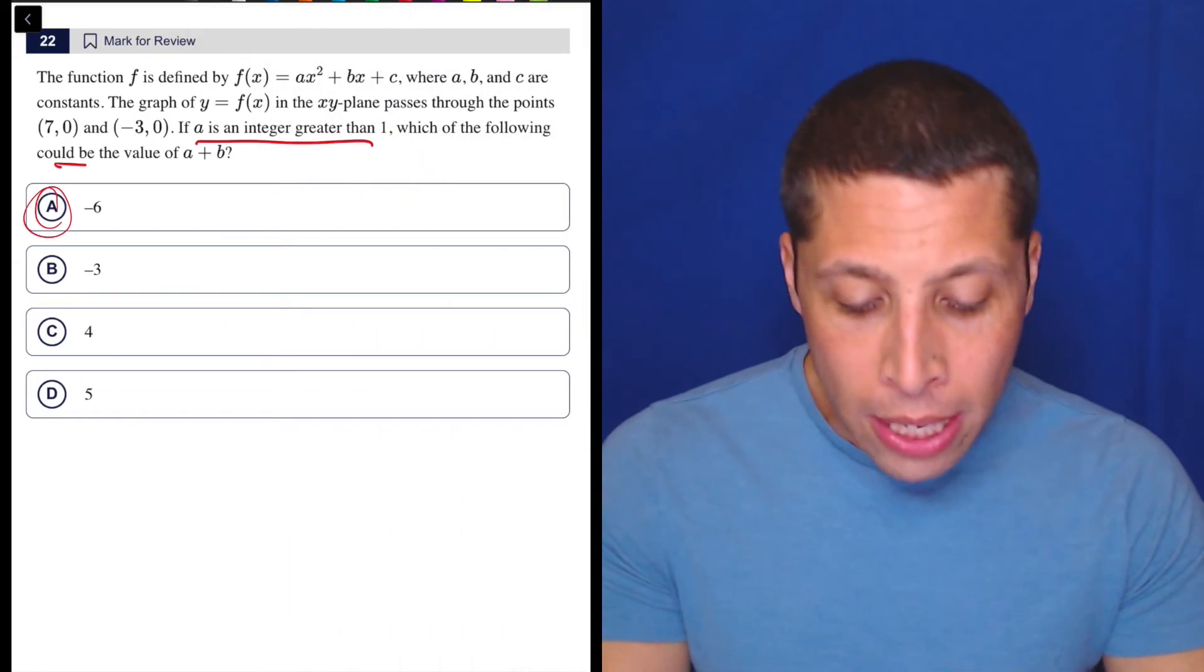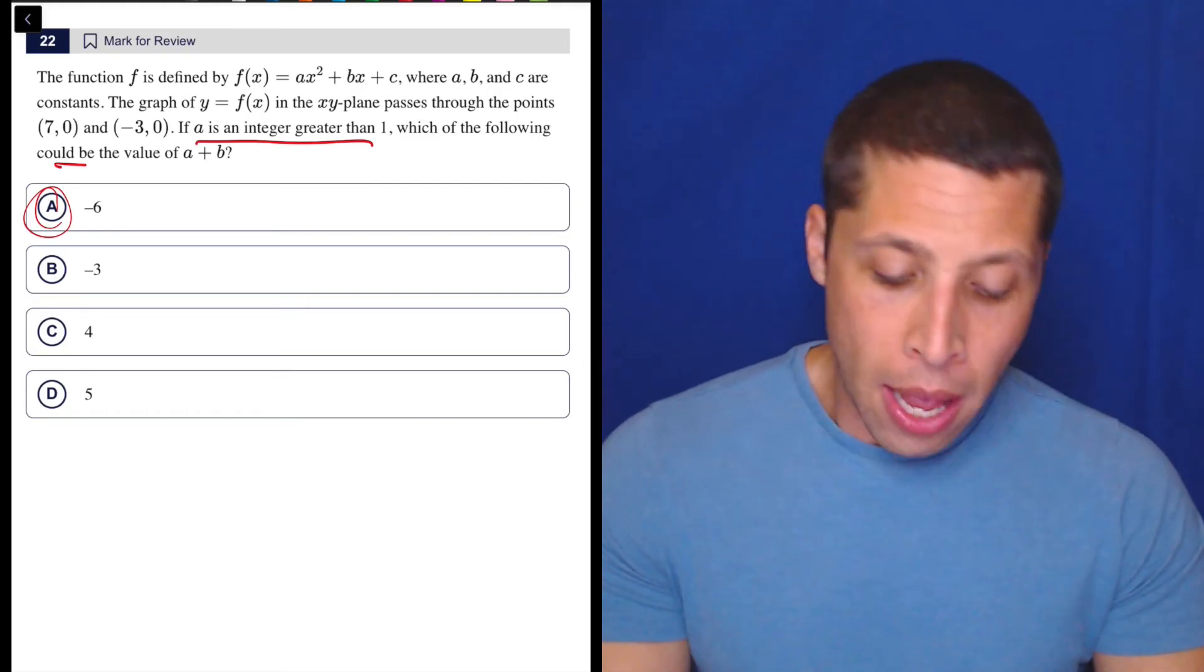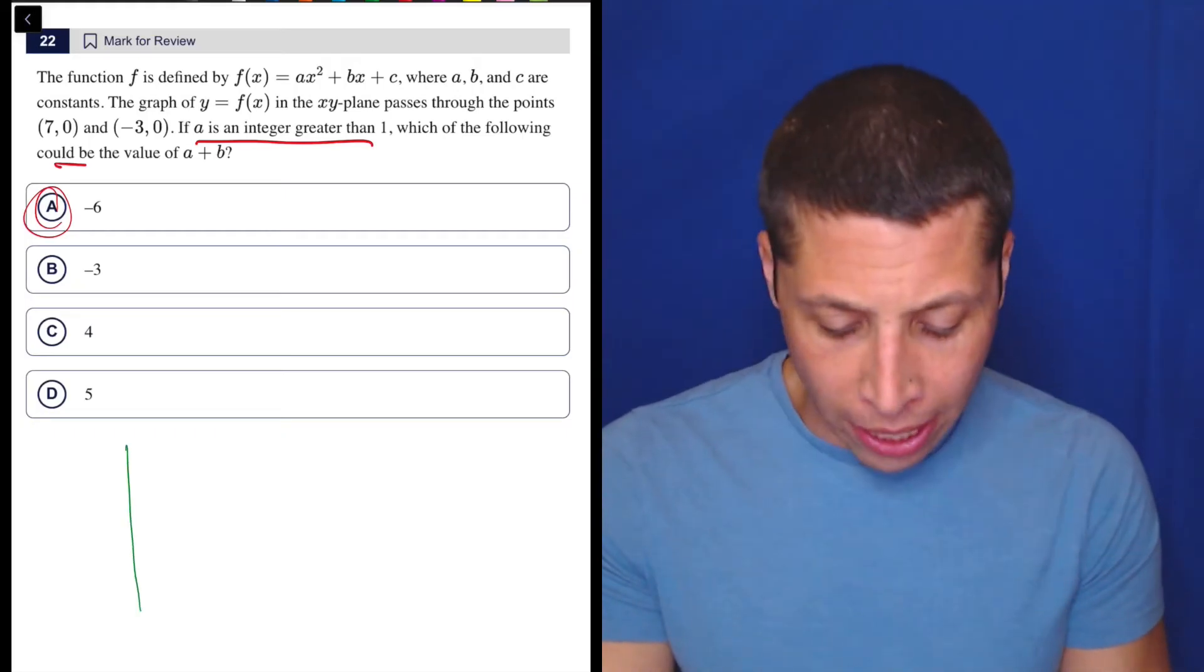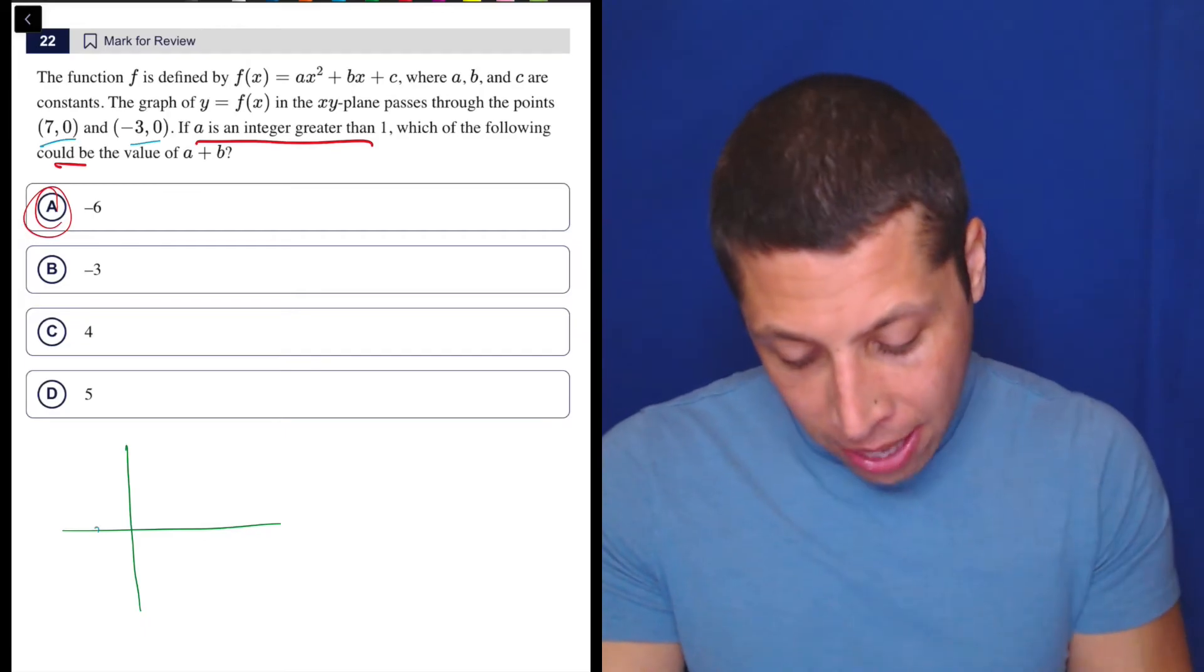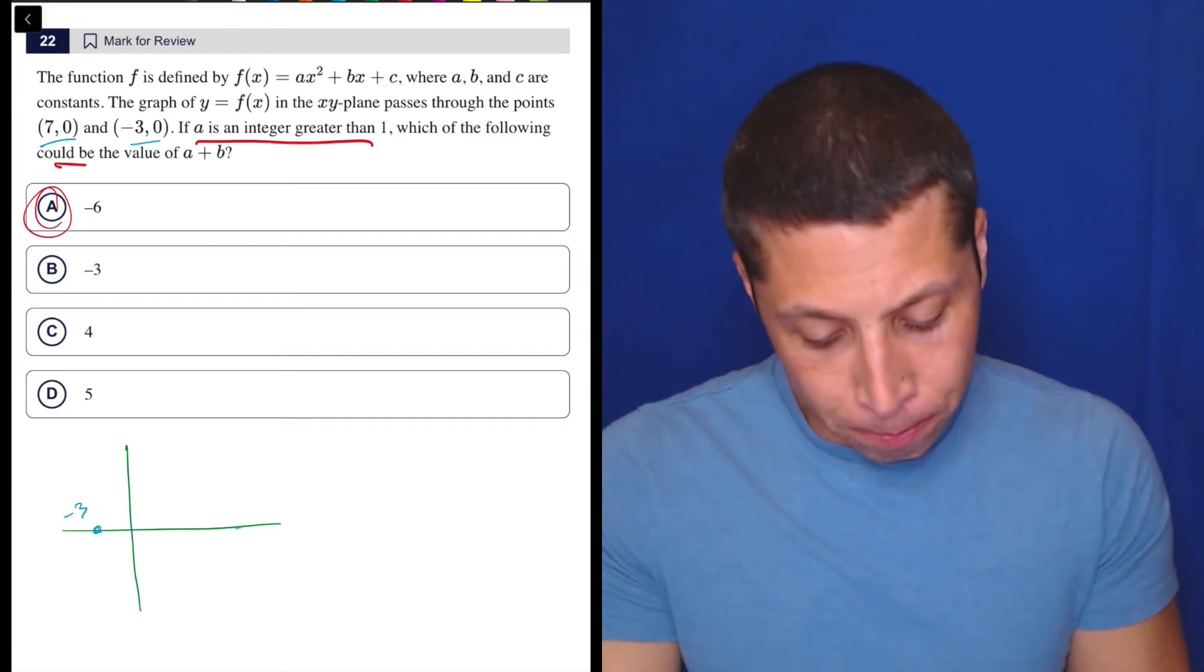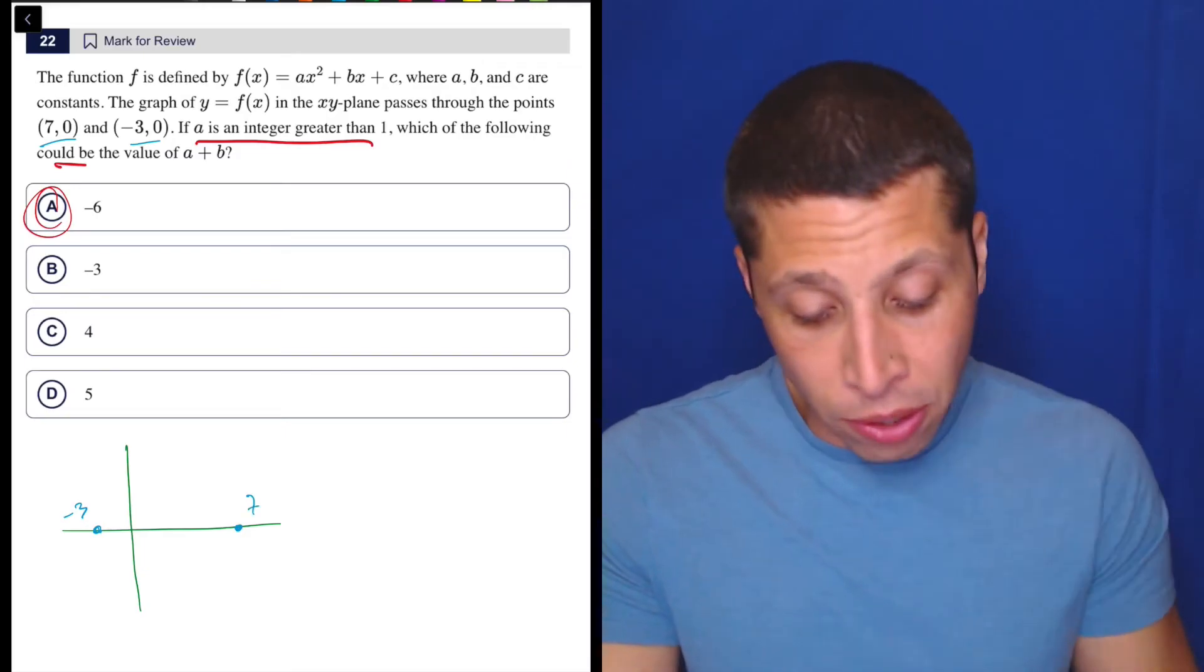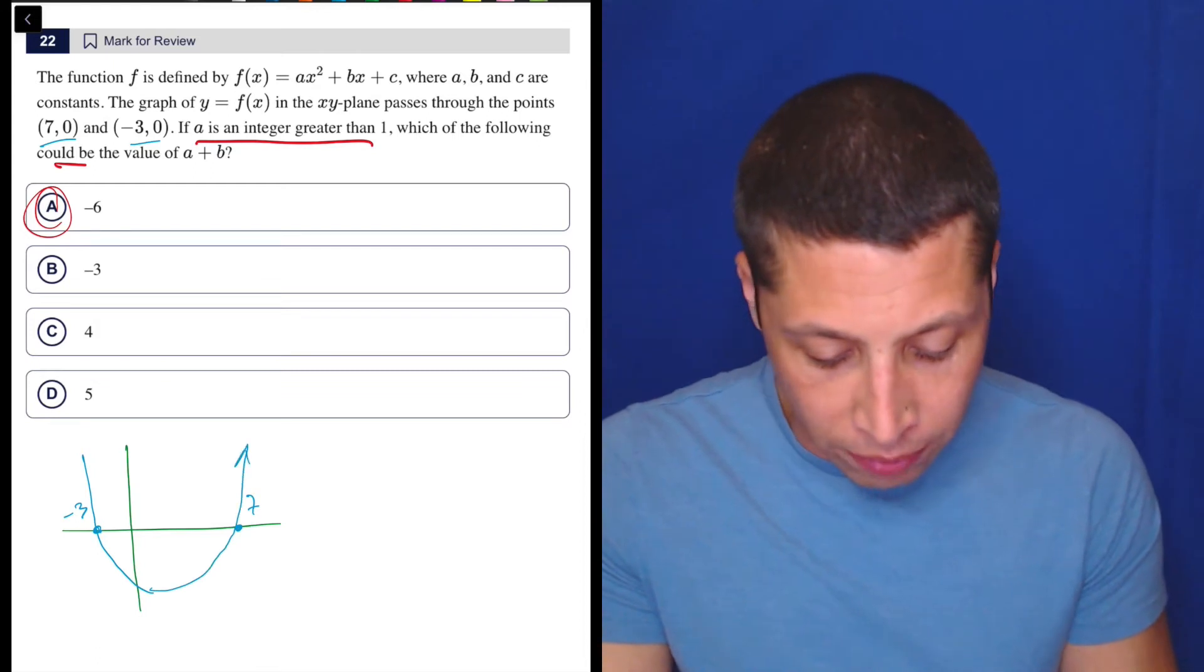So let's see if we can do this without Desmos. We have to be able to read these kinds of stories in code basically and think, all right, what do I have? So maybe I could plug points into equations, but it's also helpful maybe to kind of do a quick sketch of this graph. So if we did that, we would see we have x-intercepts at negative three, zero. So here's negative three and here's seven, right? The other x-intercept. And since a is greater than one, we know that this thing has to open upwards. So we can kind of think of it like that.